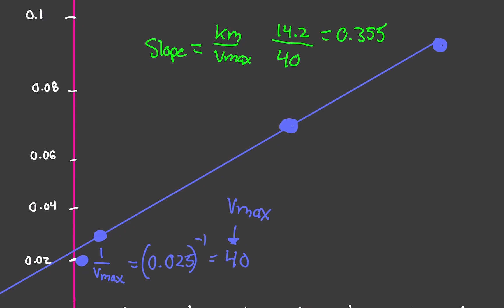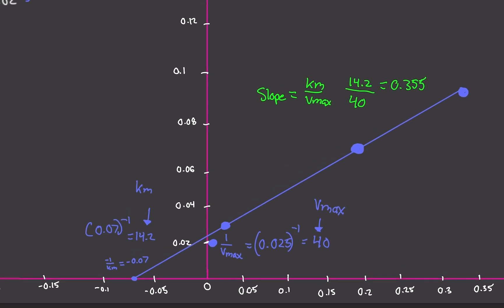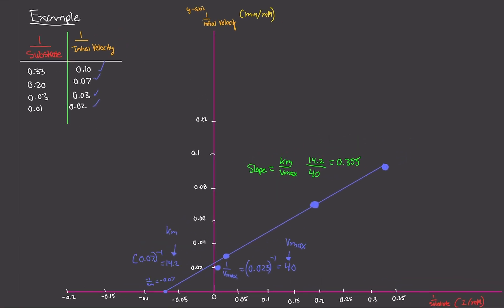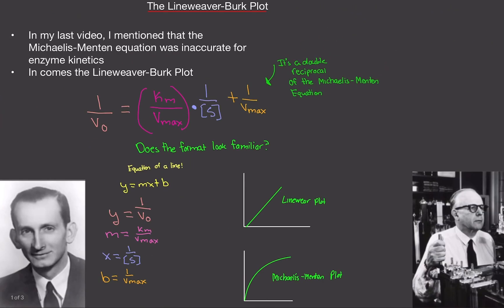So there we go — that's exactly something you would see on a midterm: calculating Vmax, Km, and the slope of the Lineweaver-Burk plot. If you found this video helpful, please like and subscribe. The next video will cover the Lineweaver-Burk plot describing competitive inhibition and similar topics. Until next time!